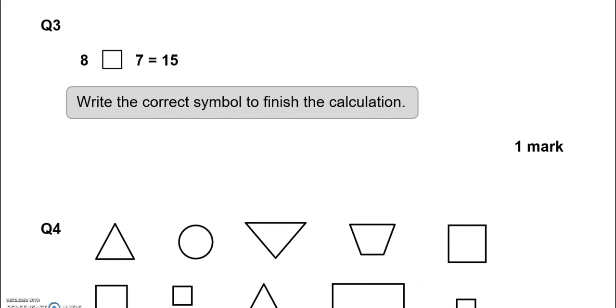Question 3. 8 and then we have 7 equals 15. Write the correct symbol to finish the calculation. 8 add 7 gives us 15.